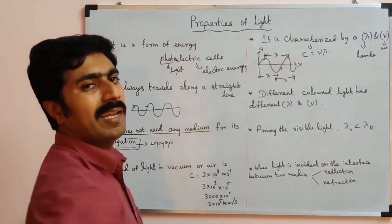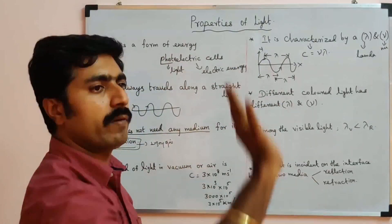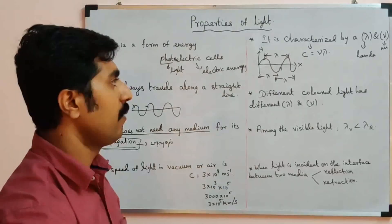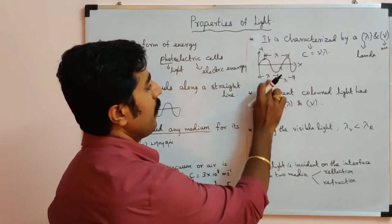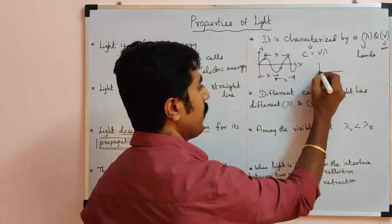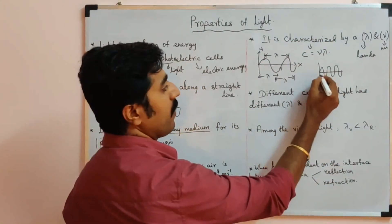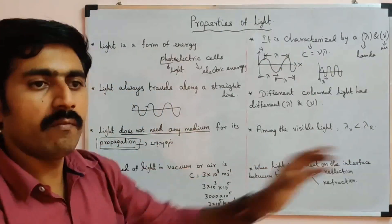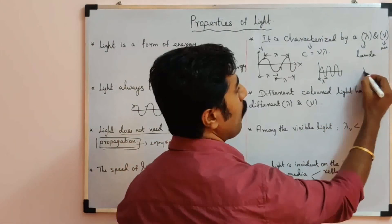Wavelength and frequency are inversely proportional. If there are more vibrations in the same length, the wavelength is shorter. So frequency is inversely proportional to wavelength.